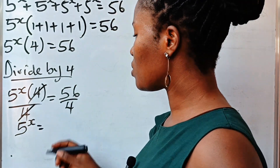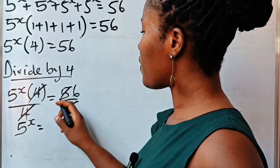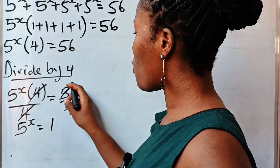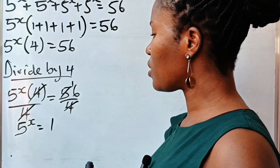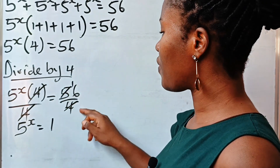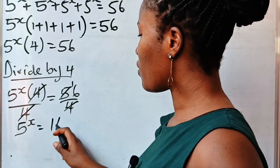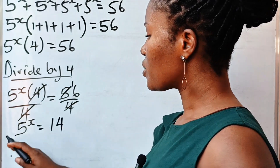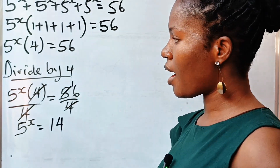Is equal to — when 4 divides 56, we have 1 remainder. 16 divided by 4 gives us 4. So 5 to the power of x is equal to 14.